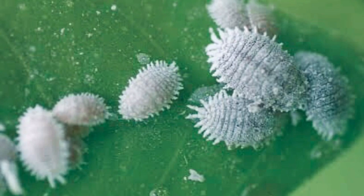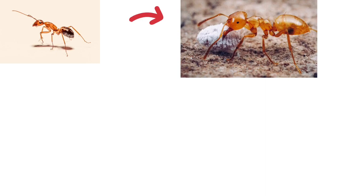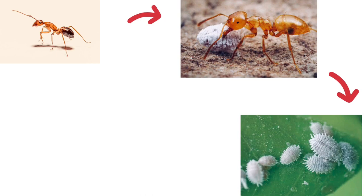Ants also play a very important role in spreading mealy bugs. Here's a quick story: an ant is inspecting your garden for a healthy plant. Once it finds one, it quickly goes and gets a mealy bug from another pot or plant. It then attaches the mealy bug under the stem or leaf of your healthy plant, giving it free transportation, shelter, and ample food.